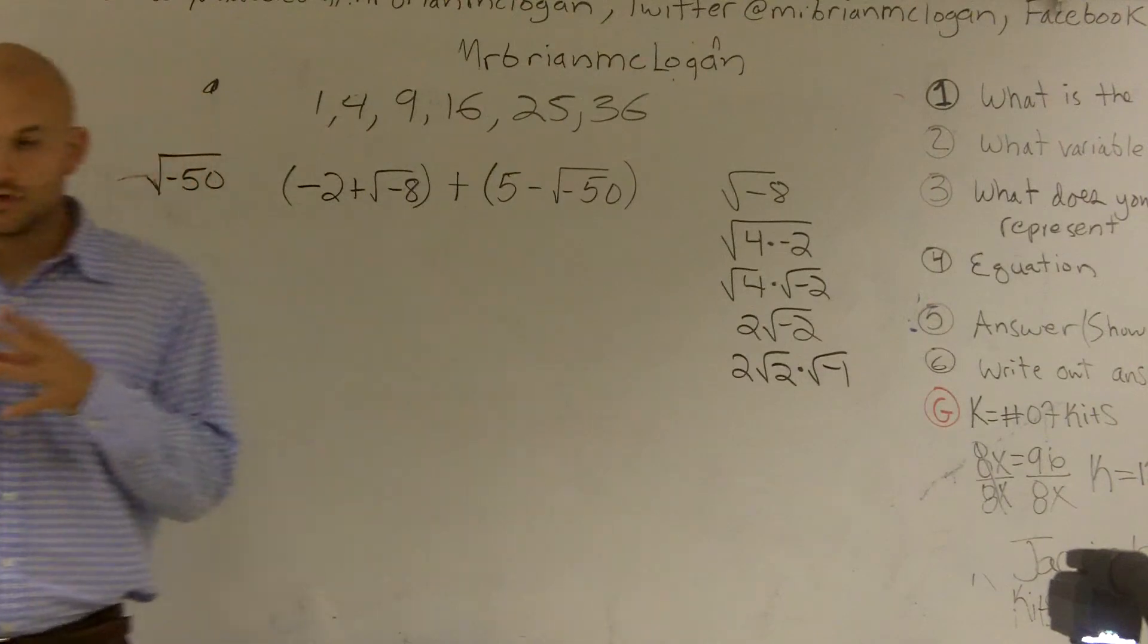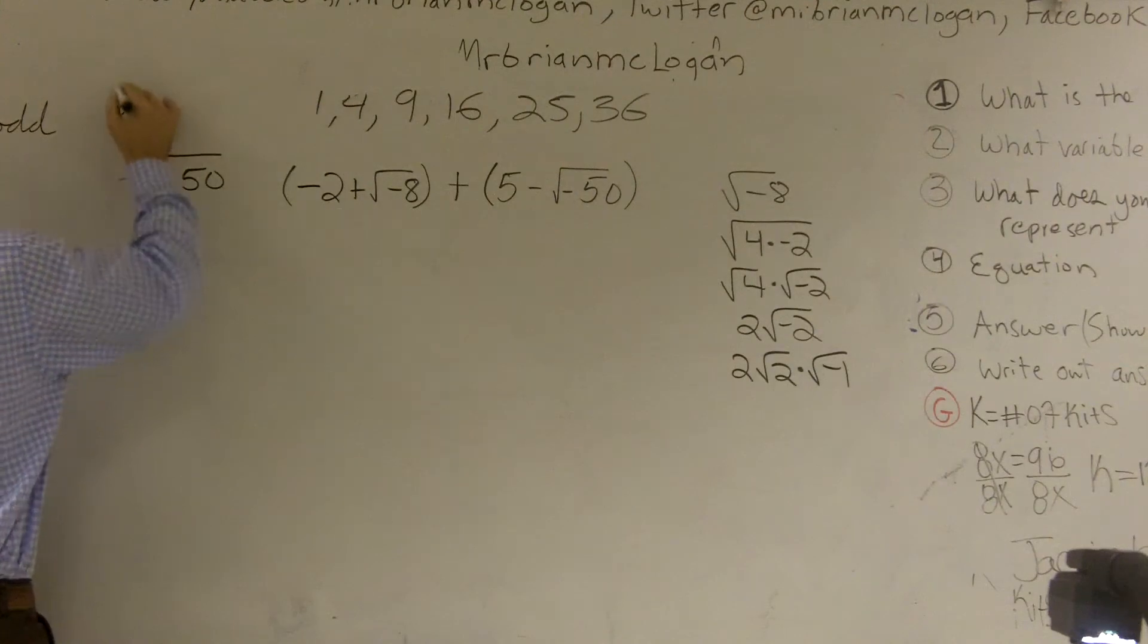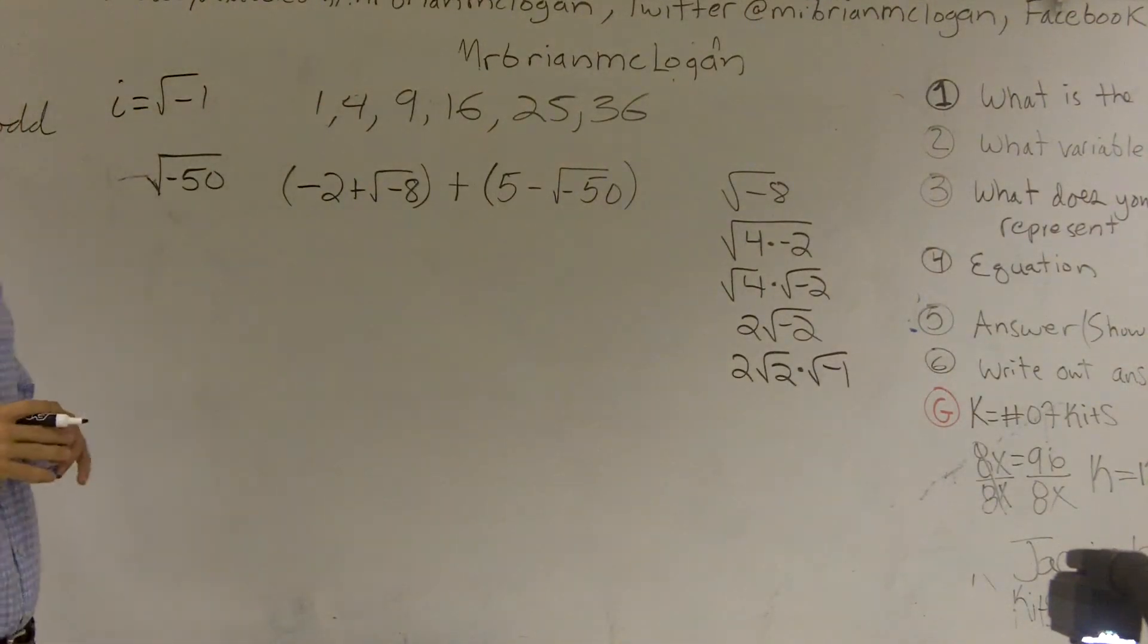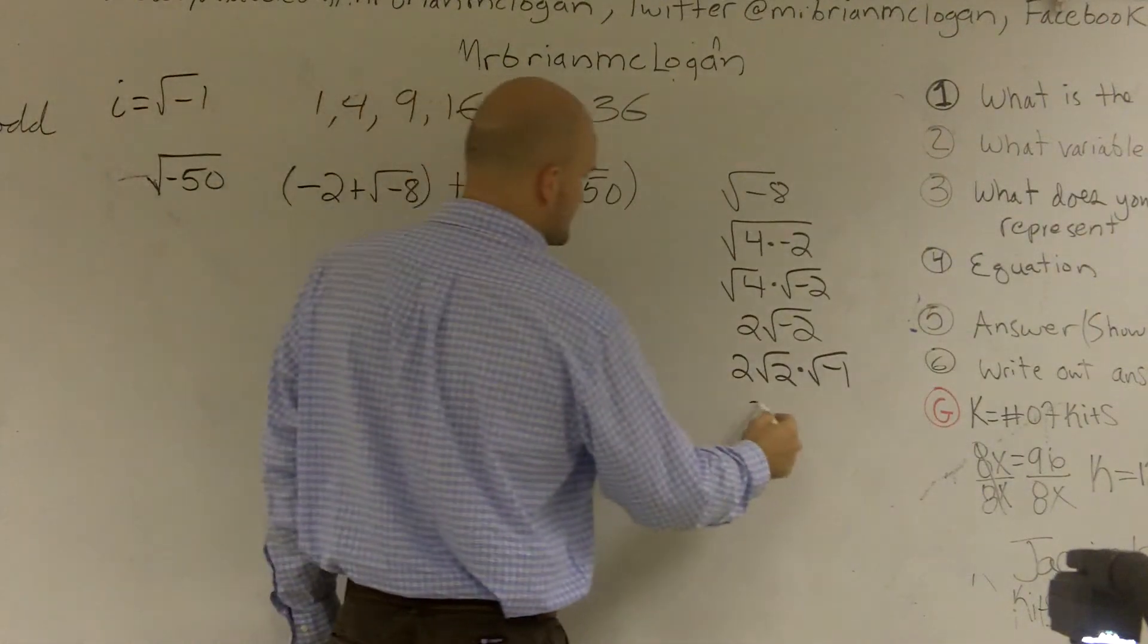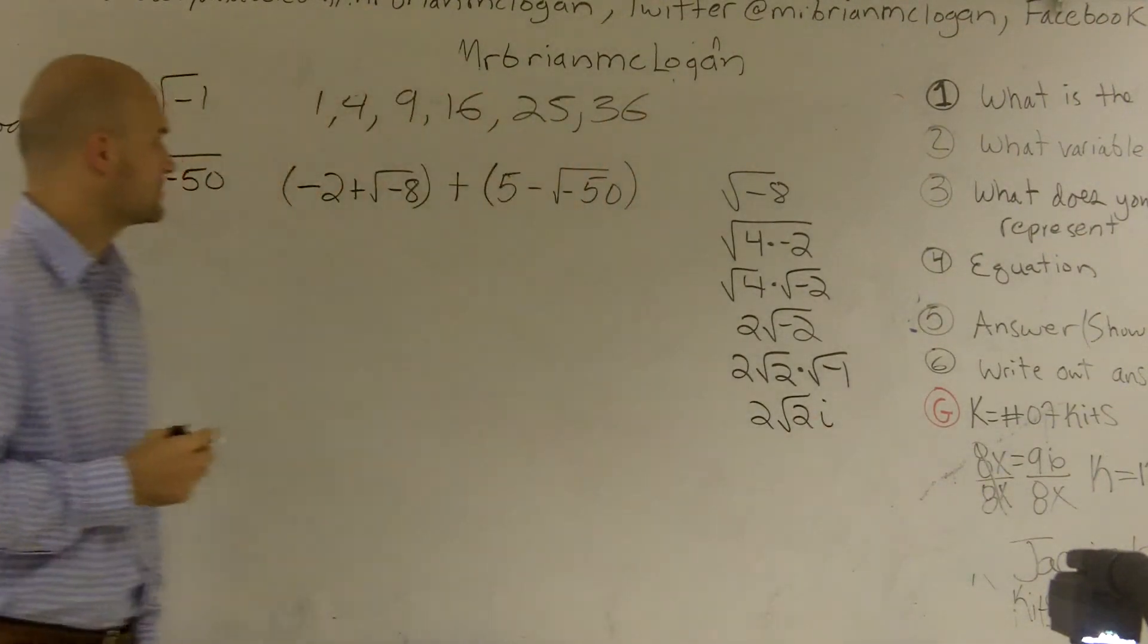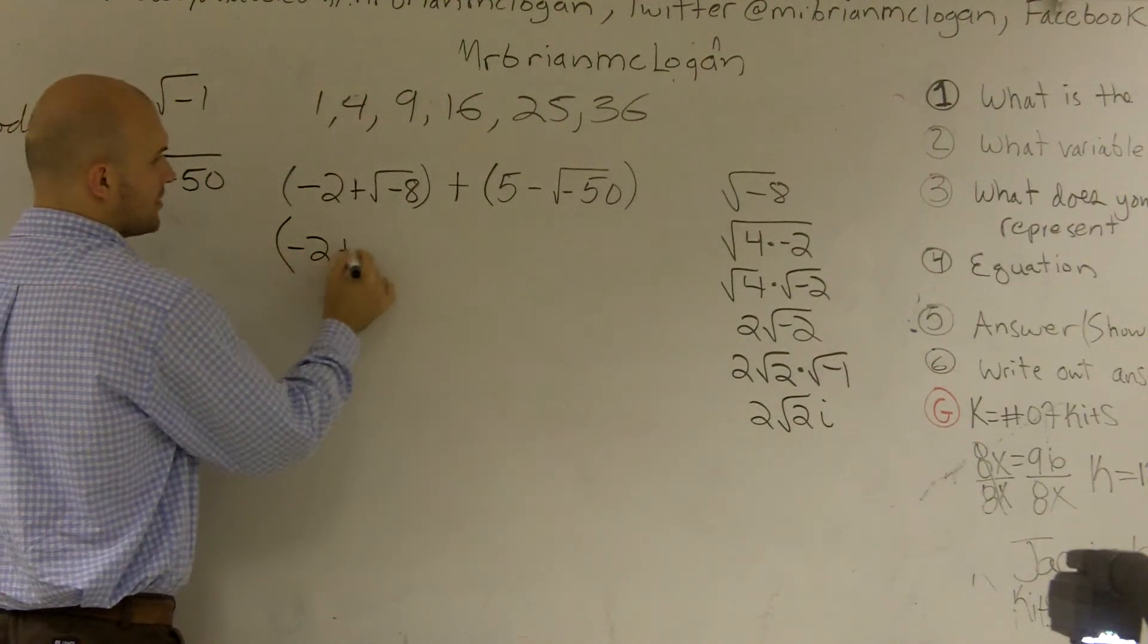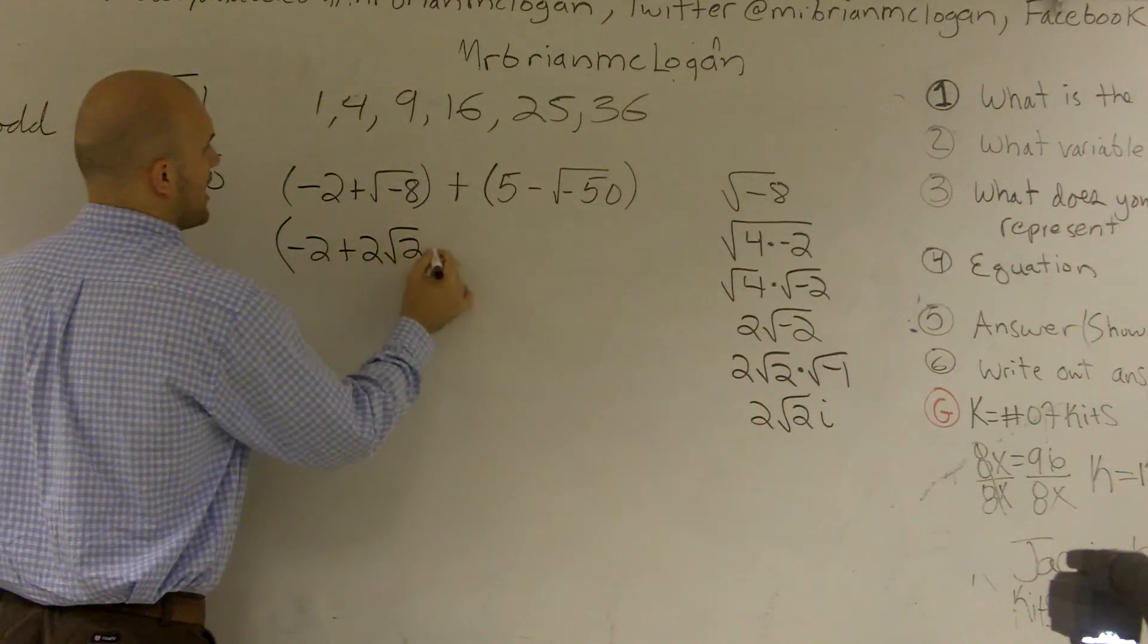One thing you should know is what is the square root of negative 1? That's what we call in complex numbers i. So I can rewrite this as 2 times square root of 2 times i. I can rewrite square root of negative 8 as 2 square root of 2i.